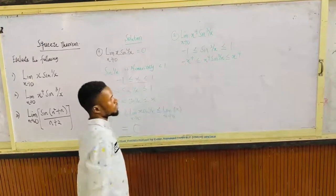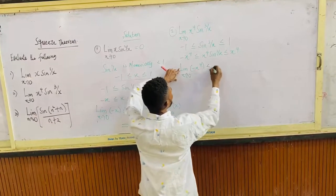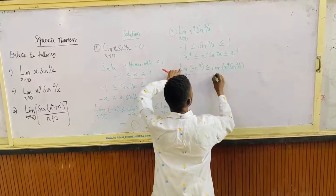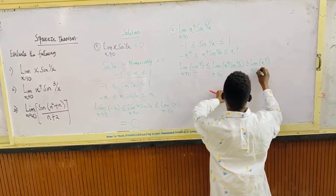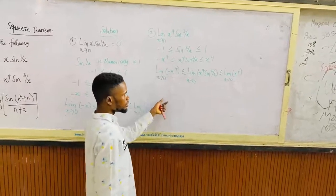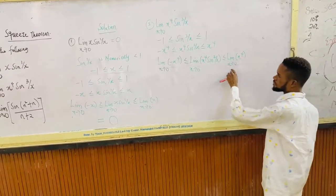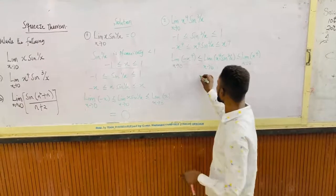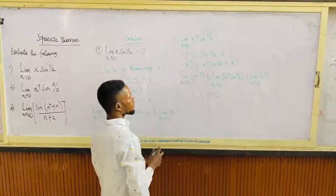If we multiply all through by x to the power 4, the limit of minus x to the power 4 at which x tends to 0 should be less than or equal to the limit of x to the power 4 sine 3 over x, which should be less than or equal to the limit of x to the power 4 at which x tends to 0. Now the limit of minus x to the power 4 at which x tends to 0 is 0, and the limit of x to the power 4 at which x tends to 0 is also 0. That means the limit of x to the power 4 sine 3 over x at which x tends to 0 is 0.